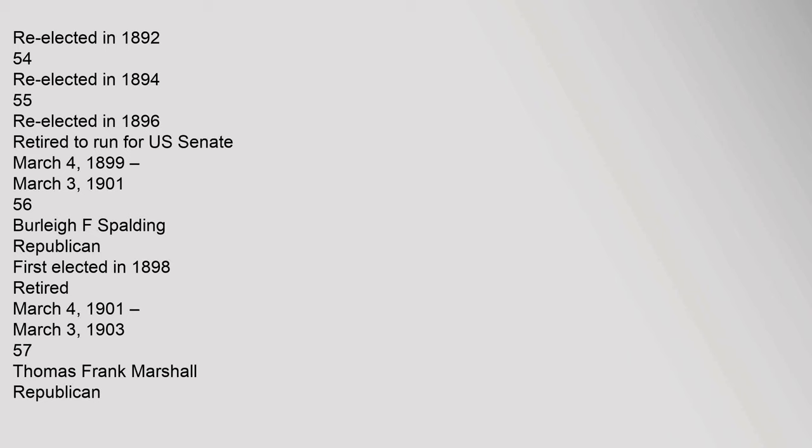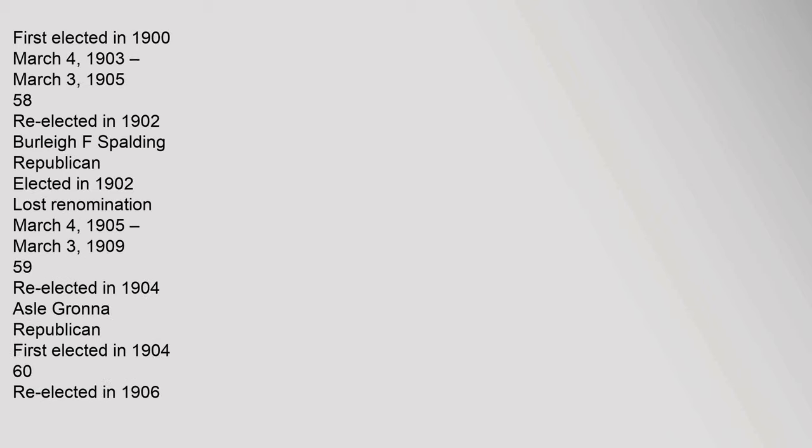From March 4, 1899 to March 3, 1901 (56th Congress): Burley F. Spalding, Republican, first elected in 1898, retired. From March 4, 1901 to March 3, 1903 (57th Congress): Thomas Frank Marshall, Republican, first elected in 1900. From March 4, 1903 to March 3, 1905 (58th Congress): re-elected in 1902; Burley F. Spalding, Republican, elected in 1902, lost renomination.